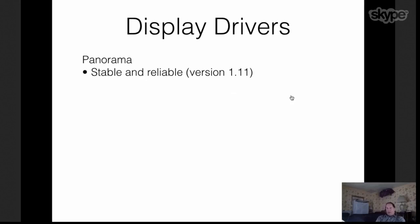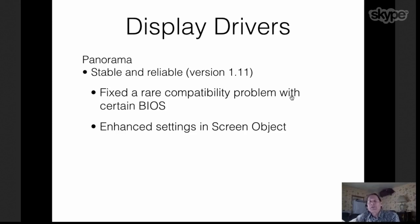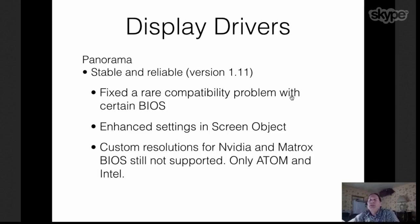Display drivers also had some work done on them. Version 1.11 is the current version, with a minor change to fix a rare compatibility problem with certain BIOS — once again we see those weird BIOS defects and fix the problems. The screen object has new settings to be able to set some custom resolution features. I also removed the monitor page, which had invalid information and wasn't used by Panorama. We still only support custom resolutions for the ATOM and Intel BIOS. NVIDIA and Matrox BIOS don't work for custom resolutions — you get whatever is in the BIOS.